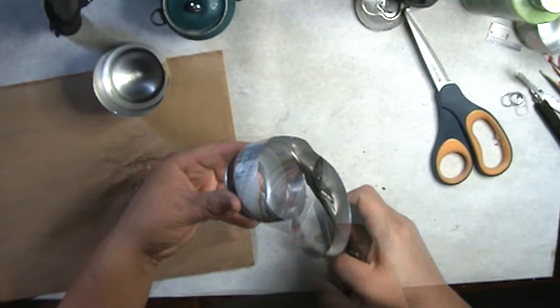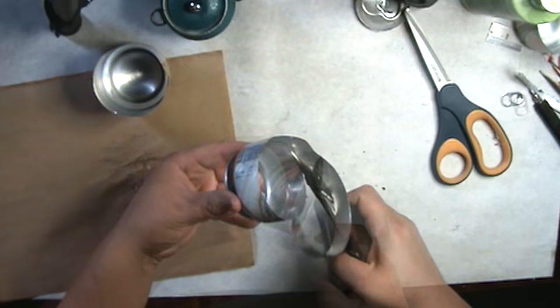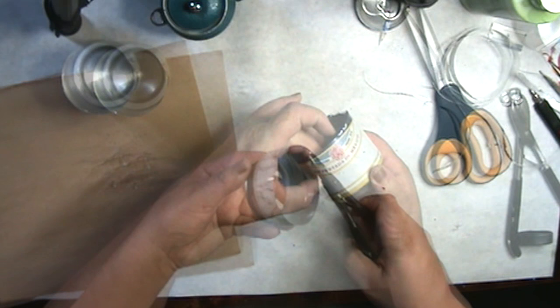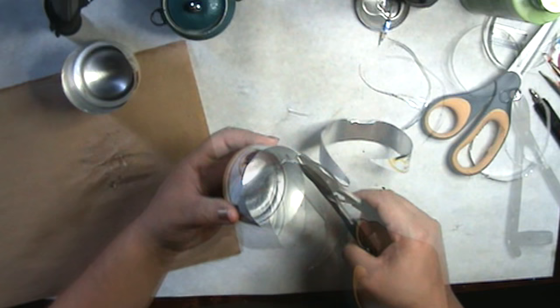So once you decide how tall you want your little mini pot, cut the can to the size you want. Trim off any uneven edges and now you're done with that part.